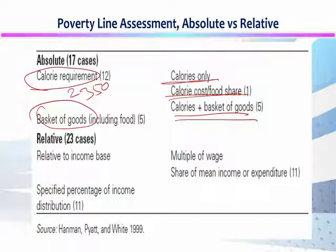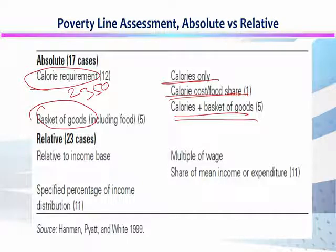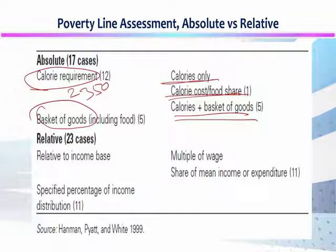Absolute poverty के लिए एक standardized criteria है। अगर किसी individual को जो calorie चाहिए होती है वो नहीं मिल रही, he or she is considered as poor. जैसे अगर एक बंदे को 2200 calorie चाहिए — अगर 2200 calorie मिल रही है तो वो non-poor होगा, अगर 2200 नहीं मिल रही तो वो poor में consider होगा।